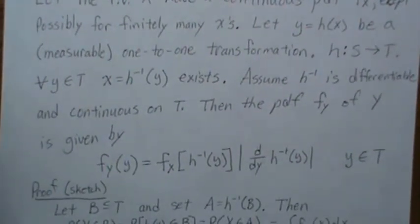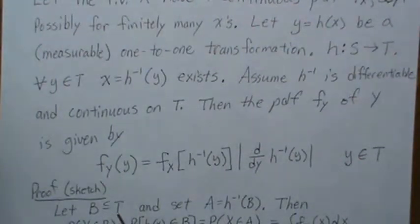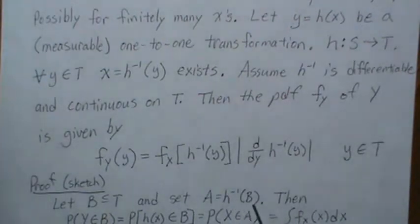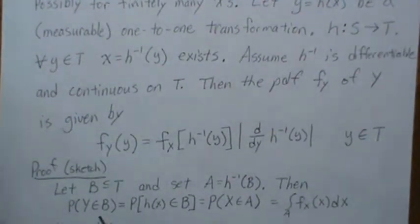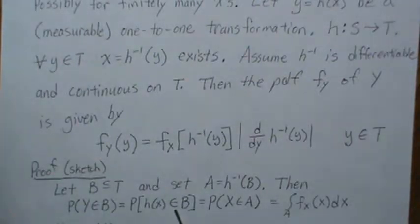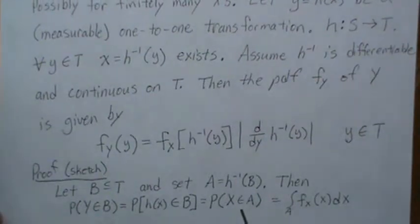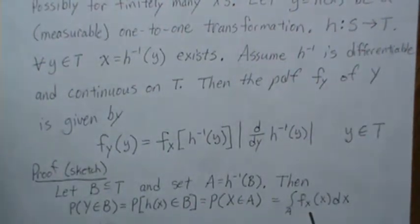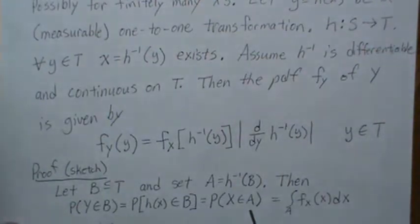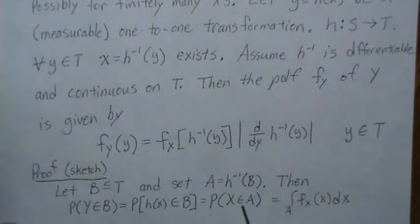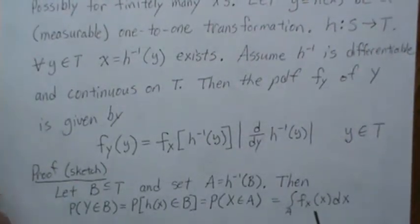Here's a quick proof sketch. Let B be a set in T, and A be the pre-image of B. We want the probability that Y is in B. Since Y is a function of X, that's the same as the probability that H of X is in B, which is equivalent to the probability that X is in A — because X has to be in A and then mapped to B. This next step is critical: the probability that X is in A means you take the density of X and integrate it over the region A.